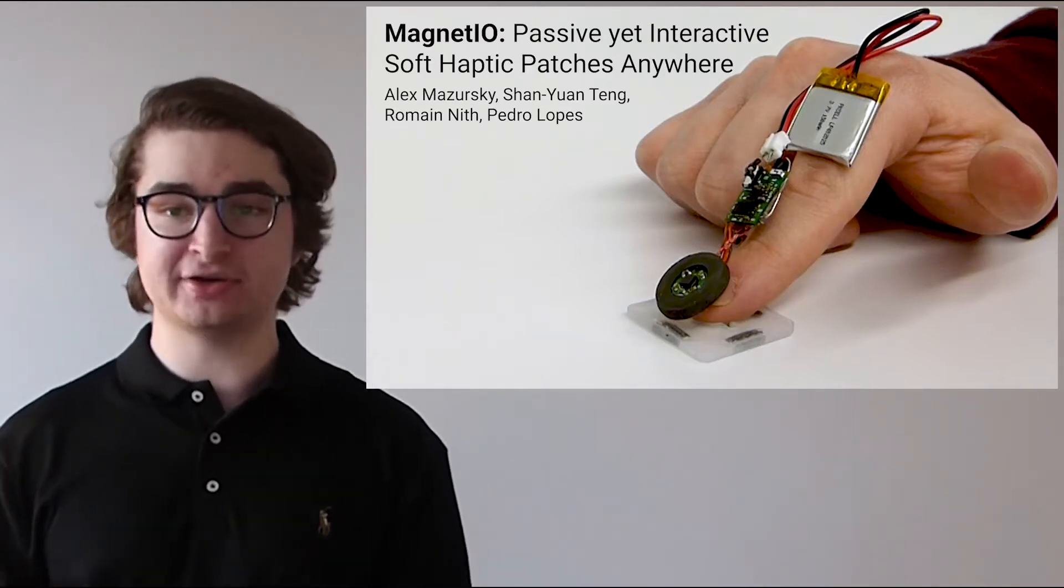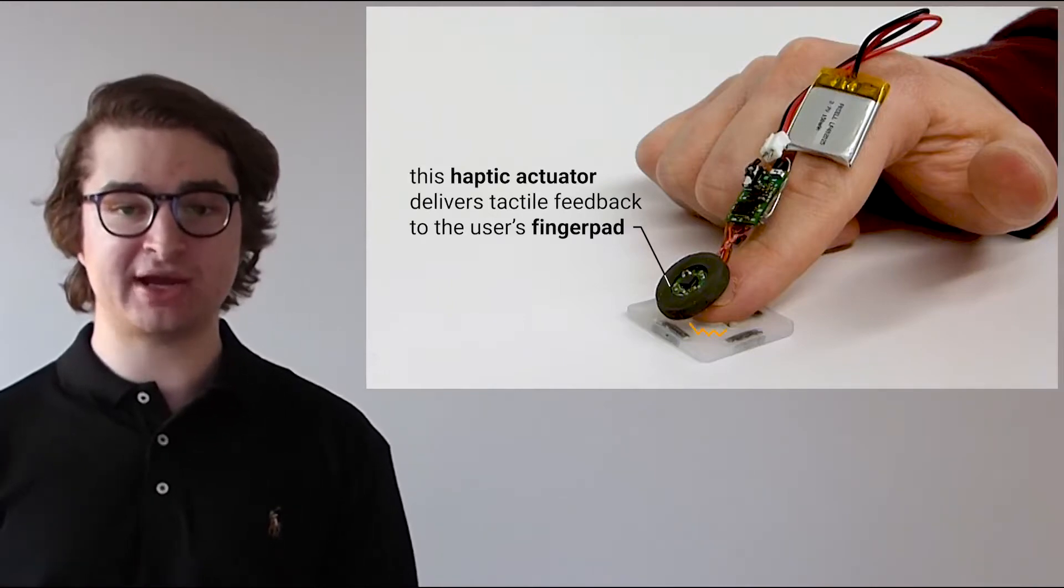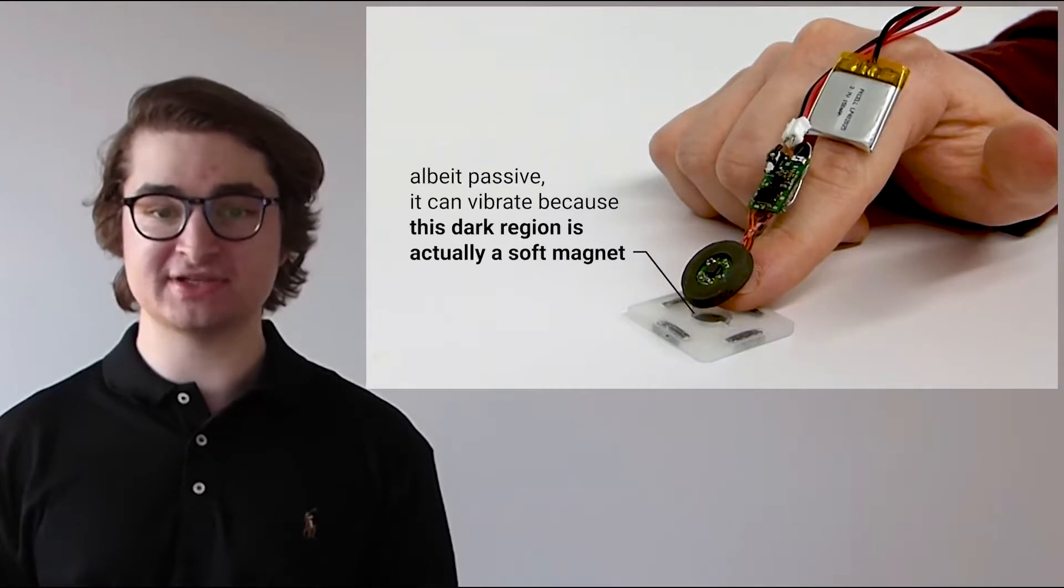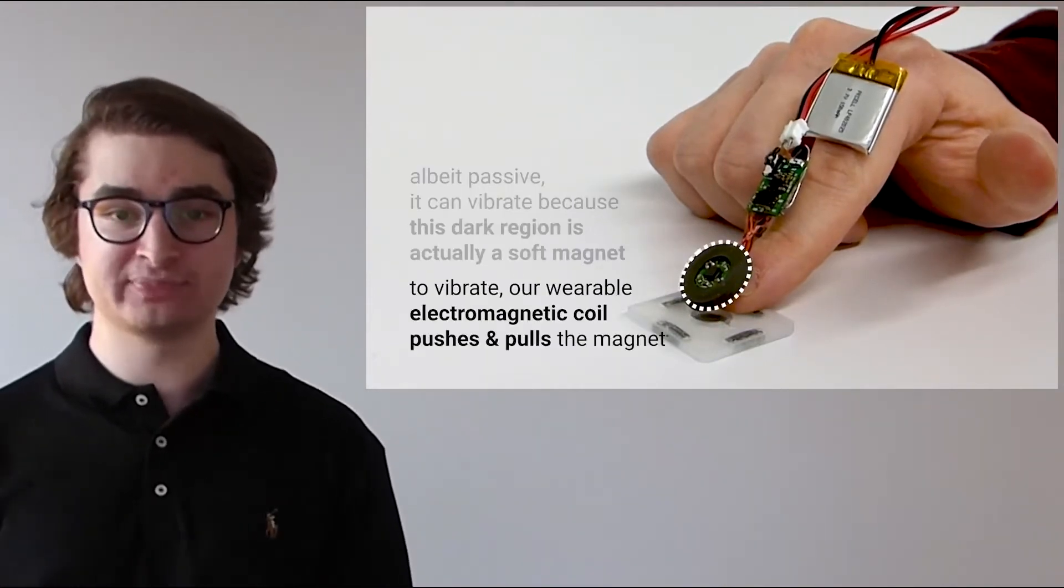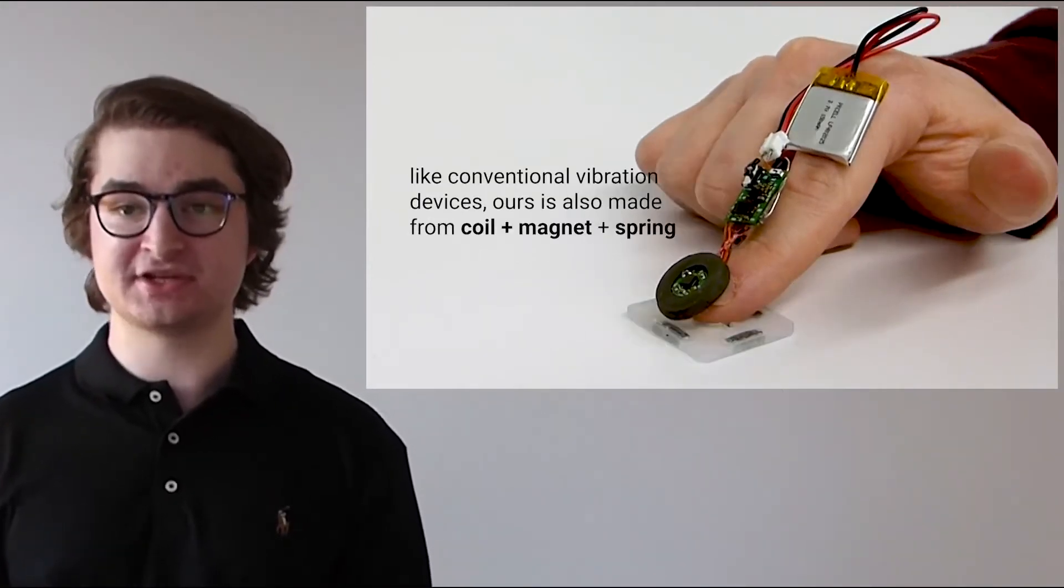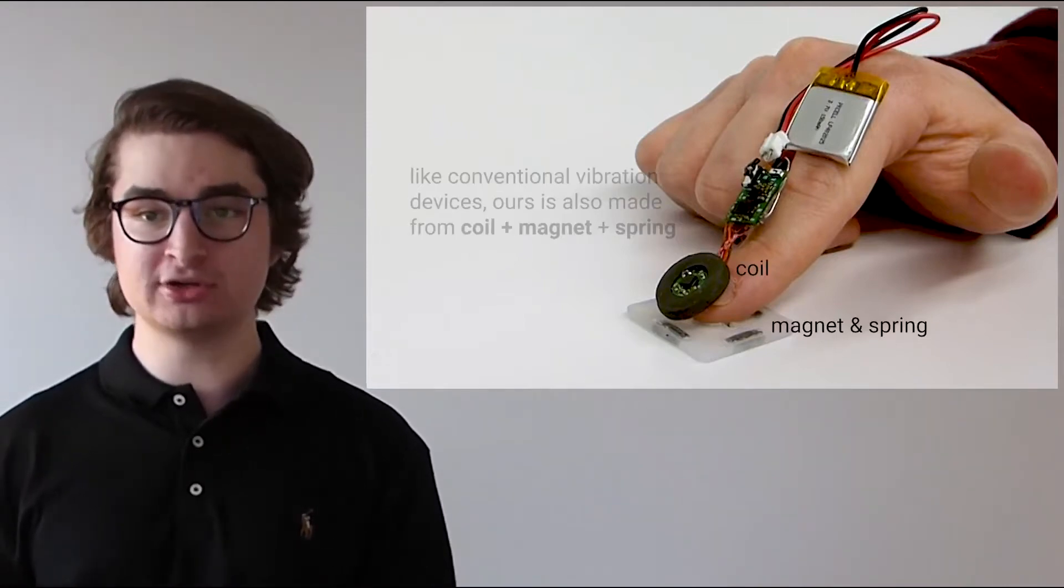What you see here on screen is our new haptic actuator, and it is currently vibrating against the user's finger pad. When we move the finger away, we can see that the vibrating element is a magnet, and it is being excited by a coil worn on the fingernail. Now, this is not unlike classical vibration devices, such as linear resonant actuators. We too incorporate the typical coil, magnet, and spring.